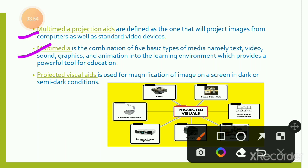Multimedia is the combination of five basic types of media: text, video, sound, graphics, and animation, integrated into the learning environment, providing a powerful tool for education. Multimedia is a complex device — for example, a mobile phone combines all these characteristics. You can send text, video, sound, graphics, and animation all together in one combination — that is called multimedia.